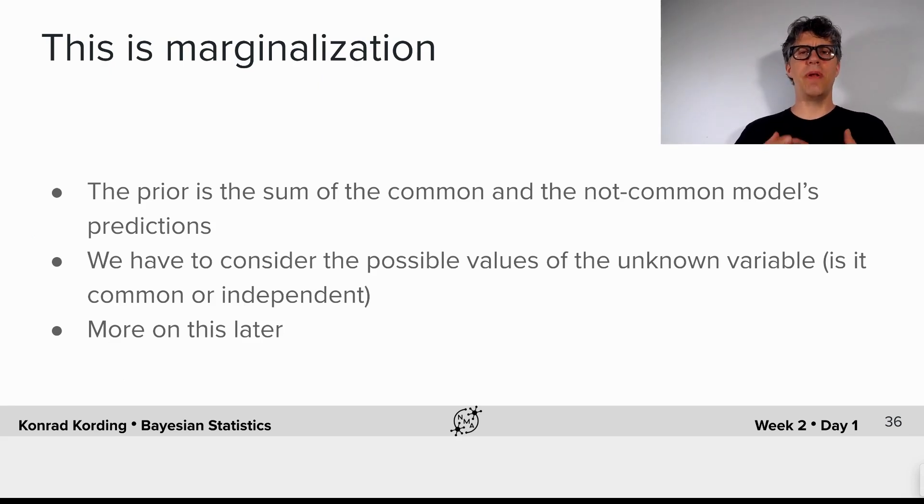Now that you have implemented the mixture of Gaussian models, I want to emphasize that this is a case of marginalization. We will hear more about that later. But the prior is the sum of the common and the not-common model's predictions.